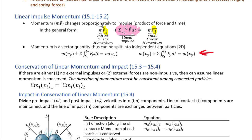If there is no impulse, or if there are only conservative impulses — such as tension in a cable connecting two masses in a pulley system — the equal and opposite tensions produce positive and negative impulses that cancel to zero between the bodies. We can then simply conserve the momentum of the system.